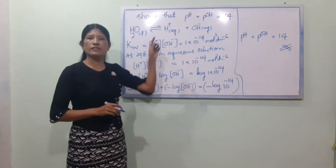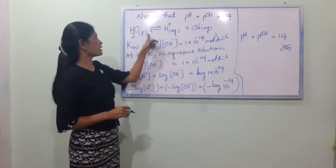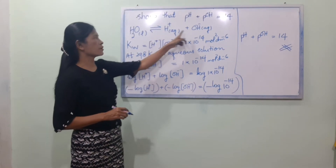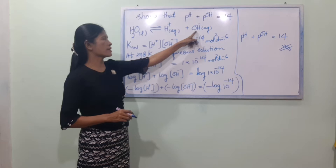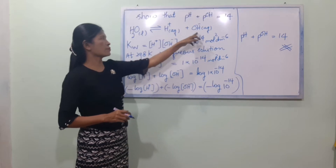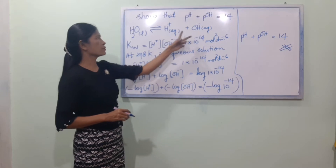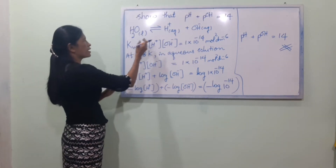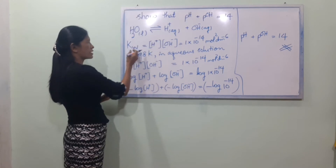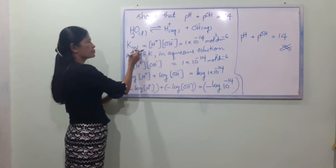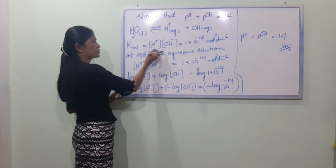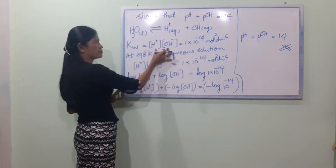pH plus pOH equals 14. This comes from the water ionization equation: H₂O in a reversible reaction gives H⁺ plus OH⁻.